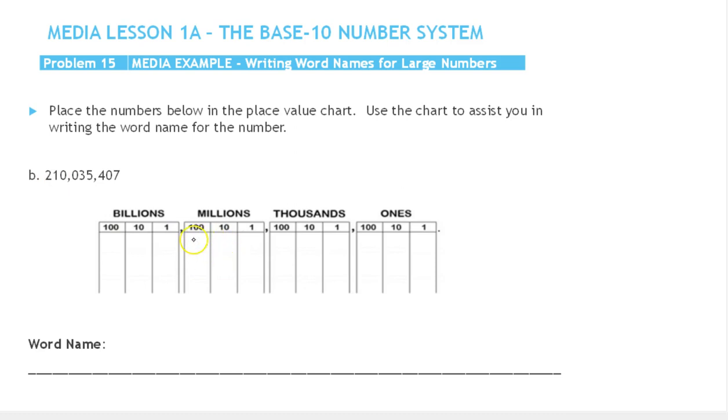I'm going to write the digits: 2-1-0-0-3-5-4-0-7. Here's my millions, there's my thousands, and there's my ones.